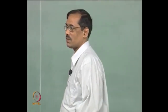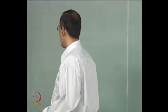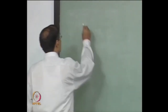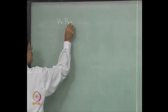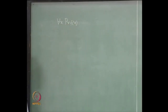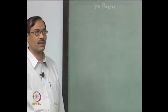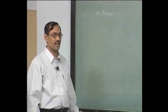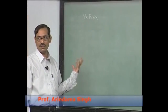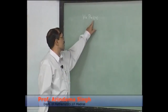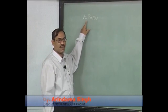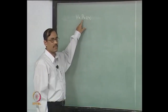Let us start with one example to see how quantifiers are interpreted. Take the formula: for each x, P(x, f(x)). We have only one quantifier here and it looks very simple. Here f is a function symbol and p is a predicate symbol — specifically, a binary predicate.